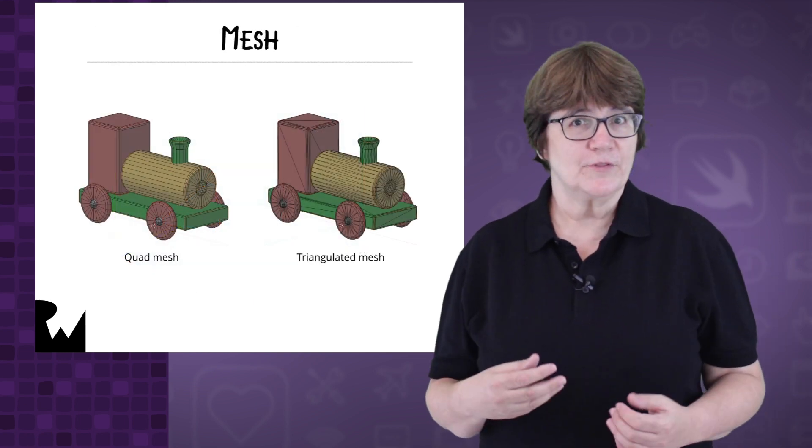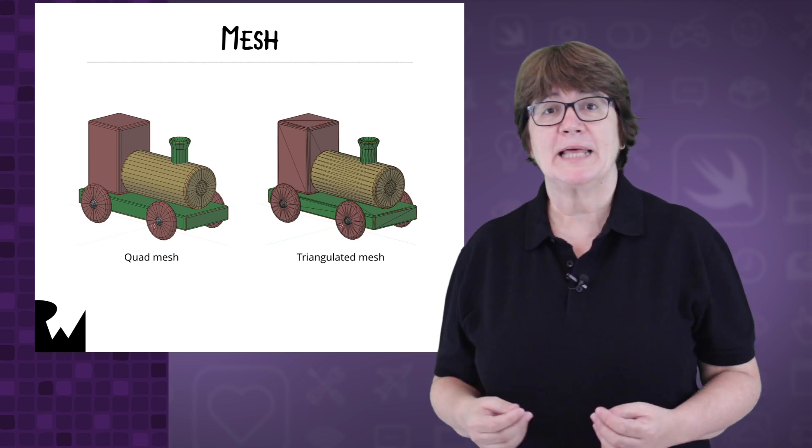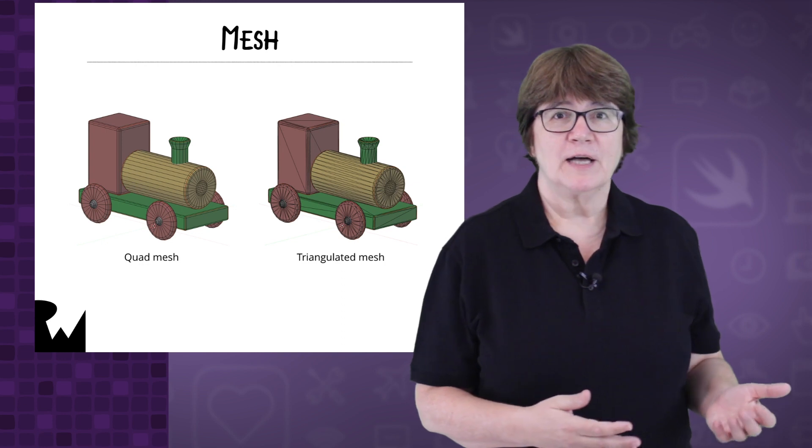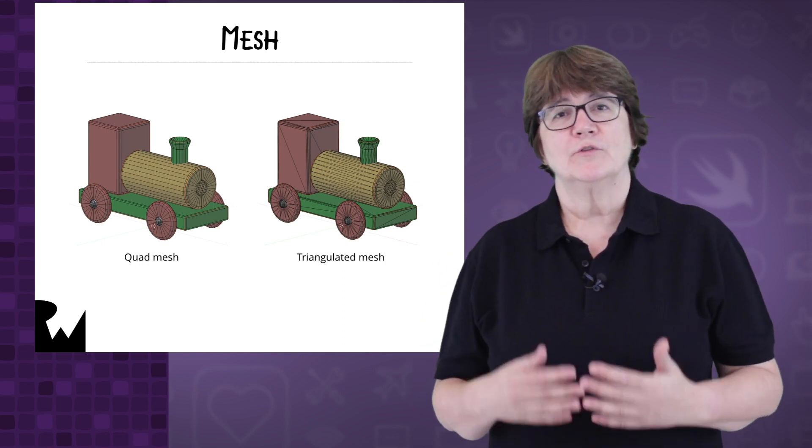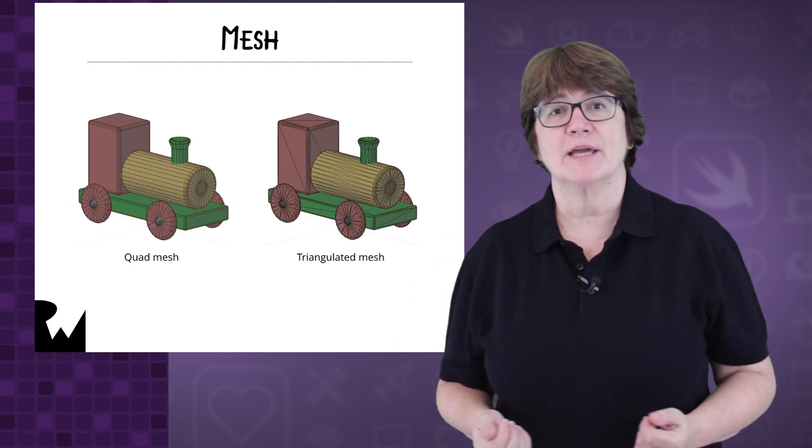Later on, we'll be working with this 3D model. On the left is the quad mesh that you'll see in Blender. A quad has four vertices. When we read the model file into our app, all the quads will be divided into two and the mesh triangulated into the model you see on the right.